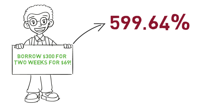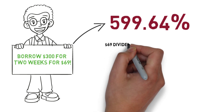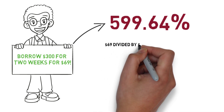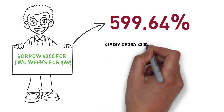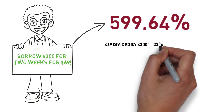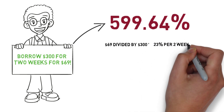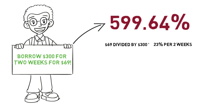Here's how to figure that rate out. Take the cost of borrowing — $69 — and divide that by the amount borrowed — $300. This gives you the interest rate for the period of the loan. This simple interest rate is 23%.